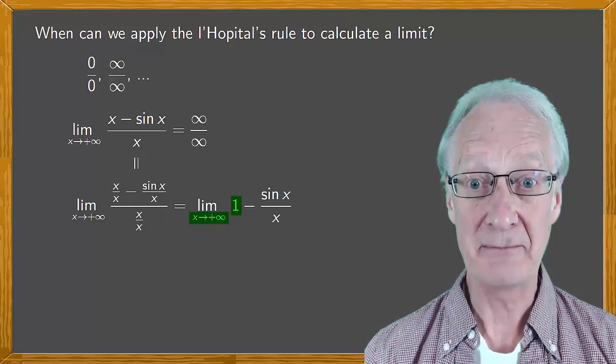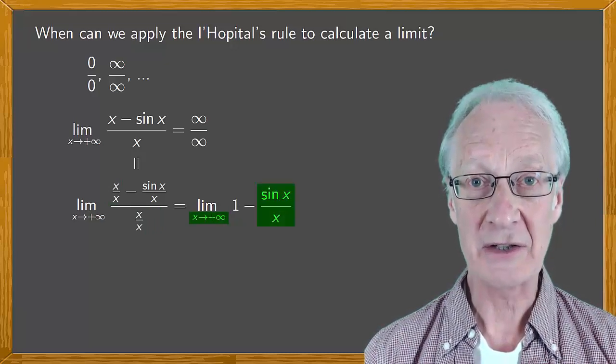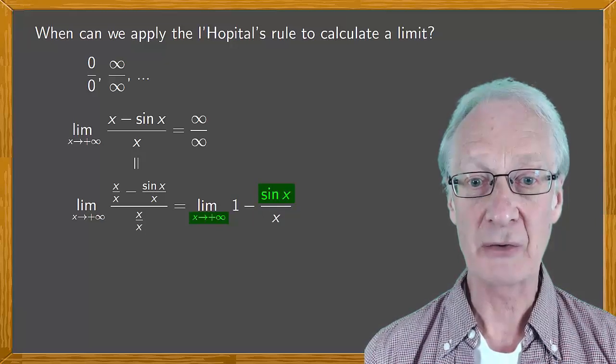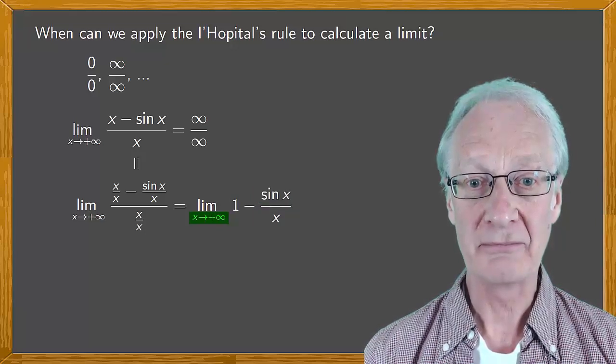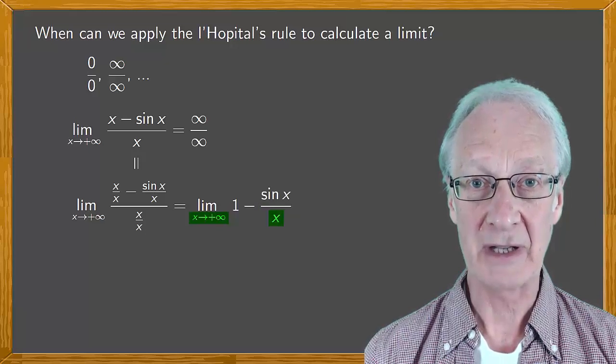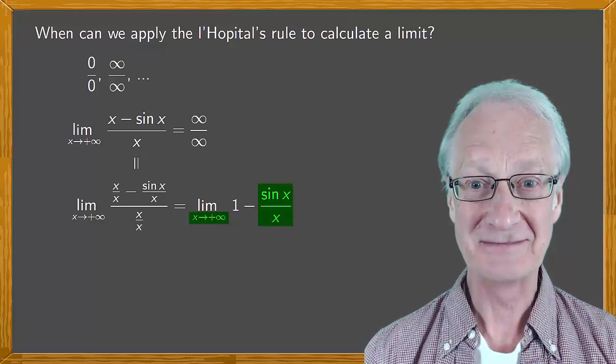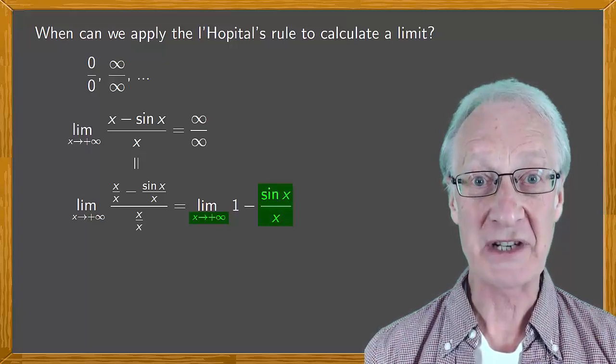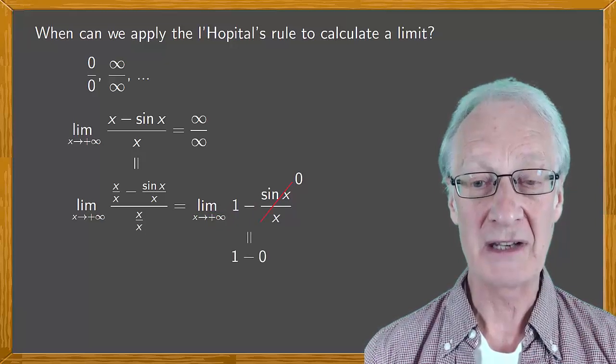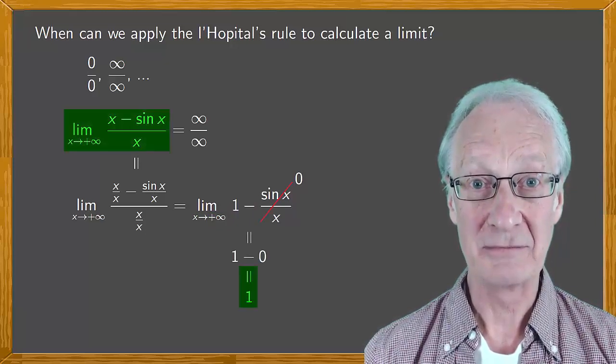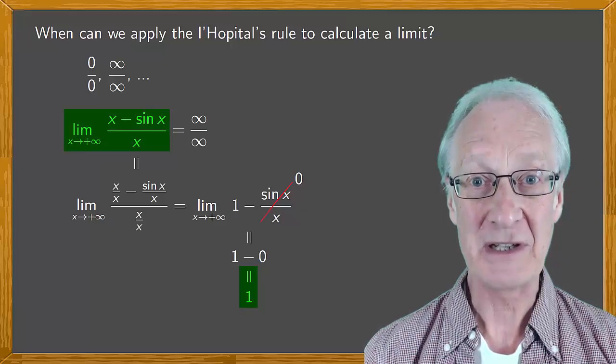the 1 remains the same. And the second term is something between -1 and 1 divided by something very big, which tends to 0. We're left with 1 - 0, which is 1. Perfect. The limit is 1.